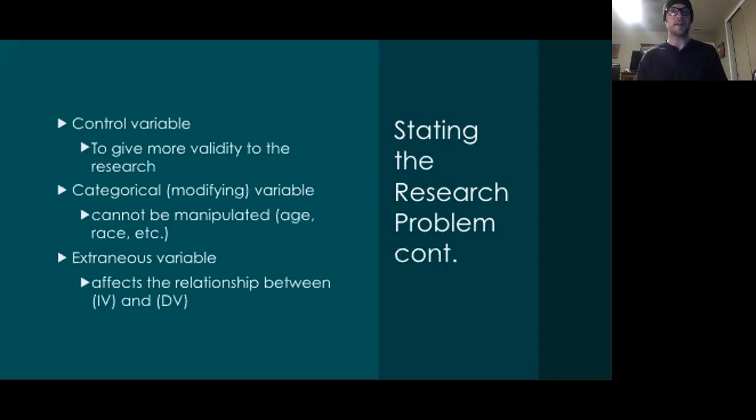Now here we have a couple of different types of variables often found in research studies. Control variables are controlled by the researcher to give more validity to the research. For example, if you are examining the effect of physical activity, you need a control group that does not participate in any physical activity programs to justify that physical activity is the reason for the change. Categorical variables are those that cannot be manipulated, such as age or race. They just group subjects or participants into different groups based on something that's not necessarily related to the research topic. An extraneous variable is one that affects the relationship between the independent and dependent variables. So if you're conducting a research study in a specific environment, and there just so happens to be construction in that environment for two weeks of the study, having to change locations might be an extraneous variable.